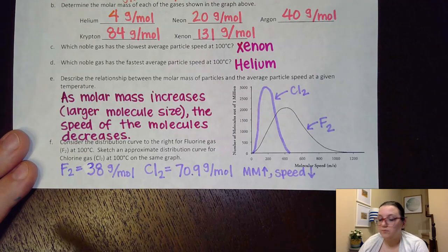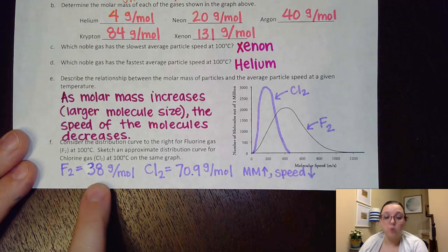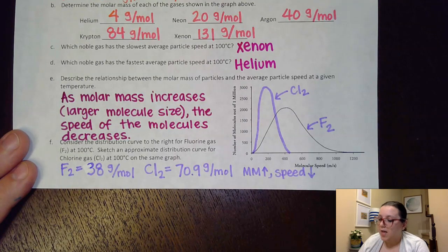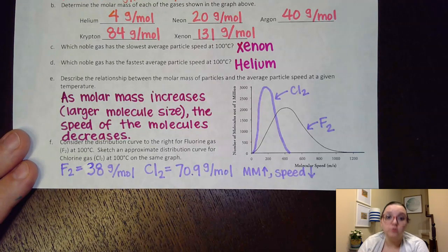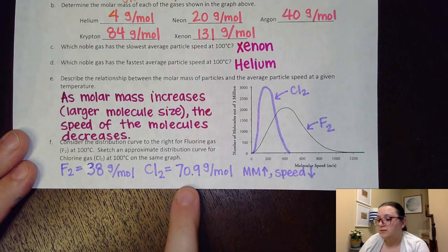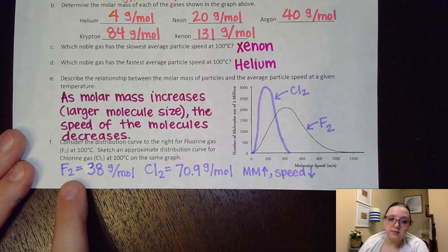So I looked up fluorine's diatomic molar mass, which is 38 grams per mole, 19 times two. And then chlorine on its own is 35.45 times two, since it's diatomic, would be 70.9 grams per mole. So I see that chlorine is a heavier molecule than fluorine is.